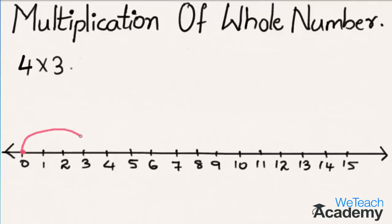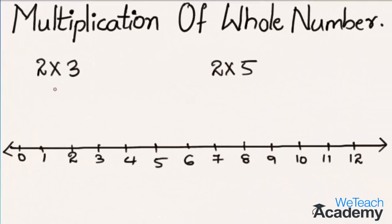And 4 jumps each of 3 steps towards the right. So here we reach at the number 12. So we can say that 4 into 3 is equal to 12.